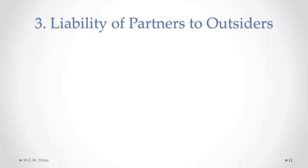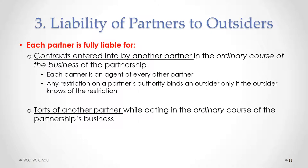What is the liability of partners of a general partnership to outsiders? The rule is that each partner is fully liable for contracts entered into by another partner in the ordinary course of the business of the partnership. If one of your partners enters into a contract — even without your knowledge — as long as it's in the ordinary course of business, that contract is also binding on you as a partner.